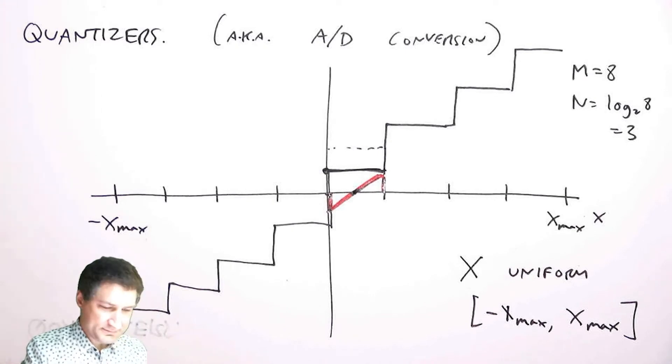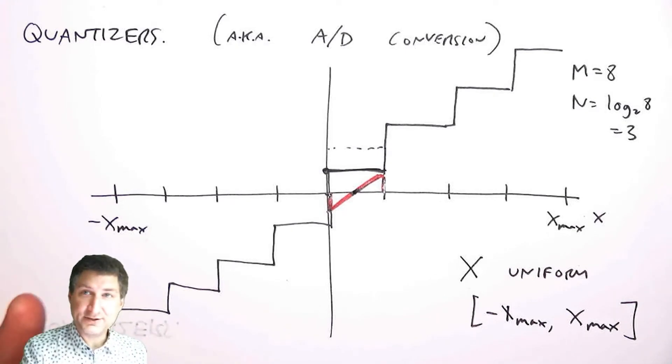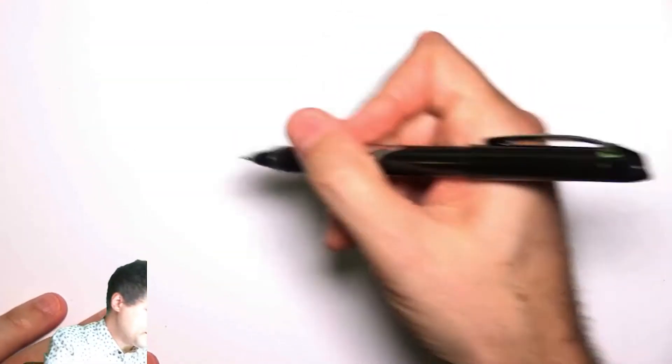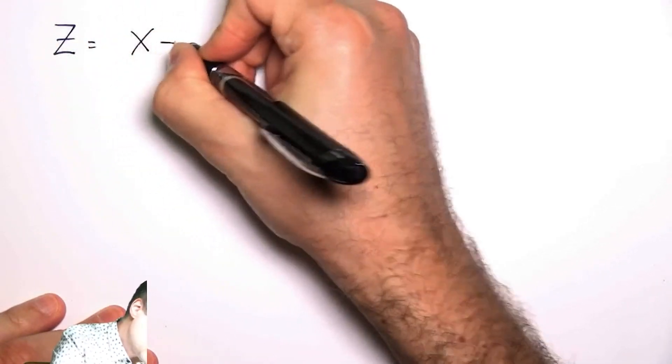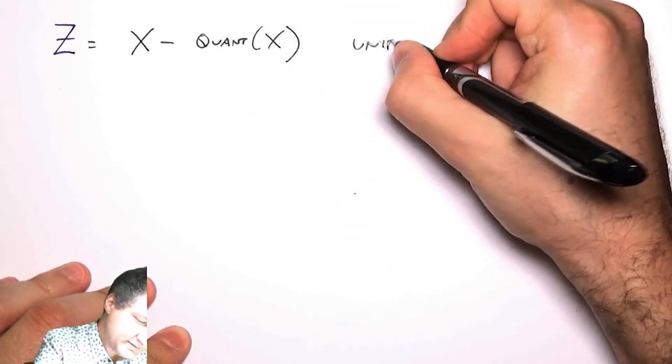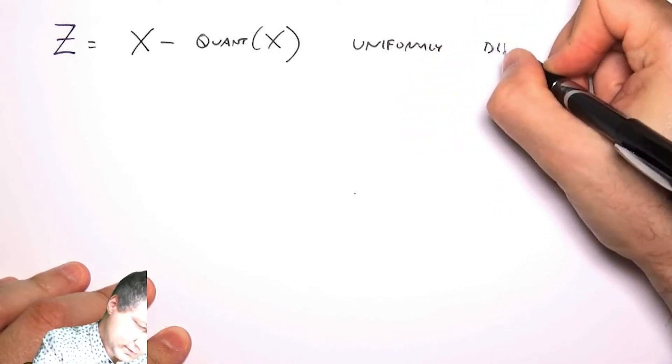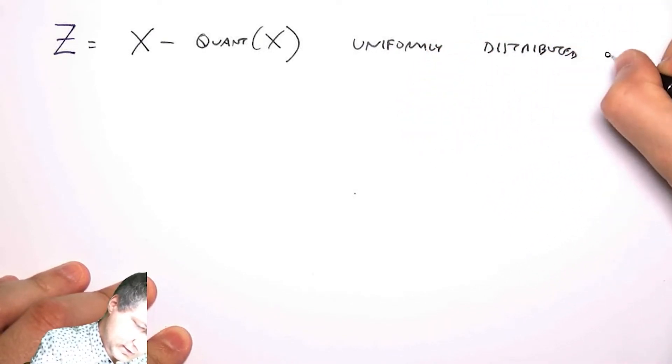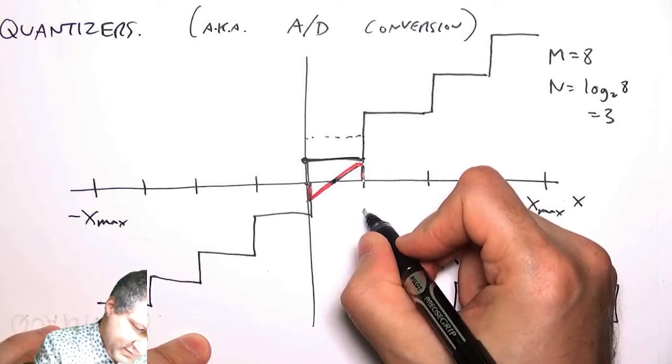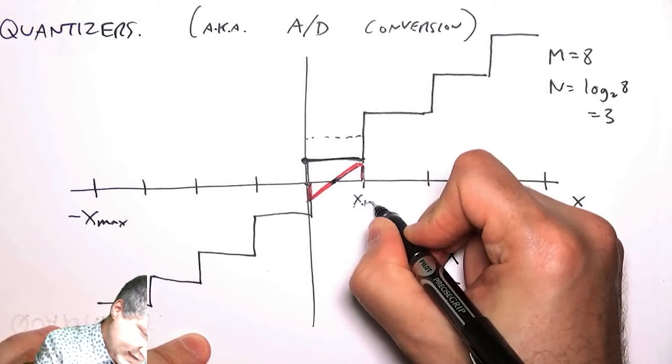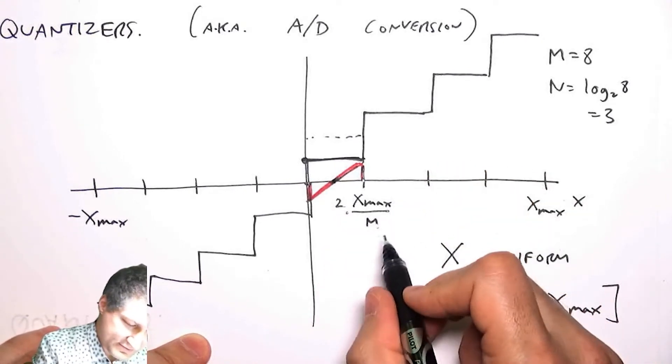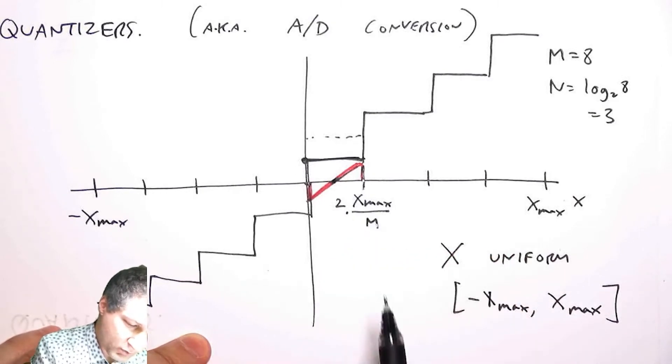So what is the expected value of the error? Basically if I have this new variable, let's call it Z, which is X minus the quantized version of X, this is also going to be a uniformly distributed random variable. Here before I was going from X_max to minus X_max. This number here is going to be basically like X_max divided by M times 2. For example, this number here is X_max over 4 when M equals 8.